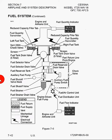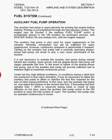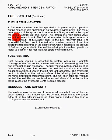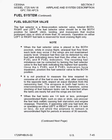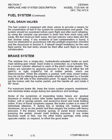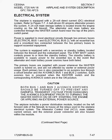Here we've got the auxiliary fuel pump operation, fuel return system, and fuel venting. Remember, fuel venting — every time you get into the airplane, on the pilot side there's that little vent that always leaks fuel out of it slowly. So you should know that. We've got the reduced tank capacity, the fuel selector valve, fuel drain valves. Then we've got the brake system.